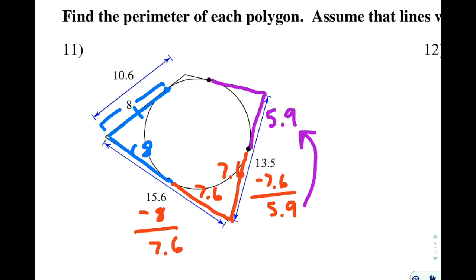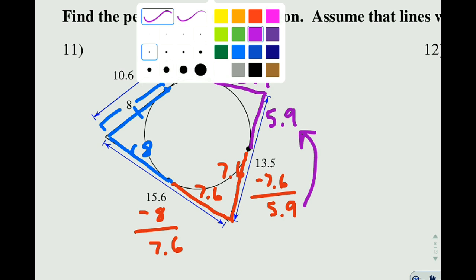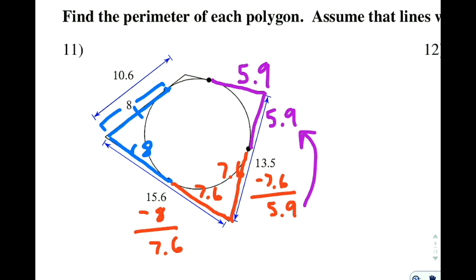Again, by the same concept here, if that's 5.9, then this is going to be 5.9 as well. Now, I don't have a side length over here, so I can't keep going. I'm going to have to go back to my original part. And if this is 8 and this whole thing over here is 10.6, I have a remaining 2.6 on the edge. Meaning that over here, I also have 2.6.